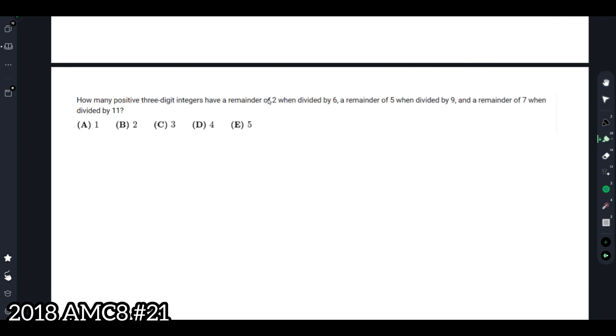Let's take a look at the remainder and the divisor. A remainder of 2 when divided by 6, 5 when divided by 9, and 7 when divided by 11. One thing we can notice here is all the remainders are exactly 4 less than the divisors. So this means we can find a three-digit integer by taking the LCM of 6, 9, and 11 and subtracting it by 4.